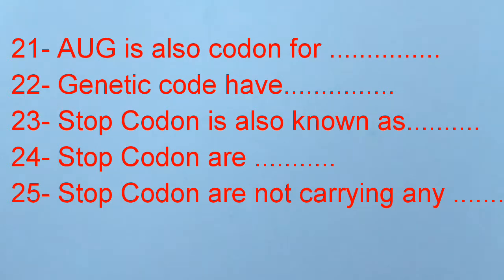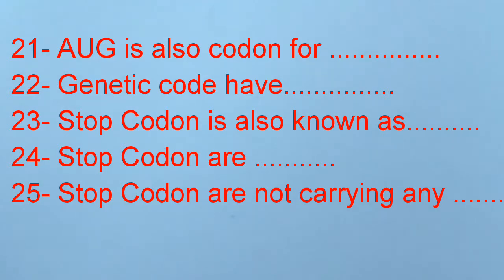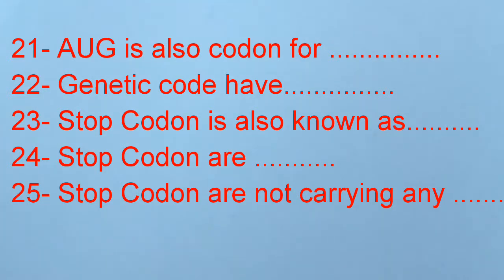Number 21: AUG is also codon for ___. Number 22: Genetic code has ___. Number 23: Stop codon is also known as ___. Number 24: Stop codons are ___. Number 25: Stop codons are not carrying any ___.